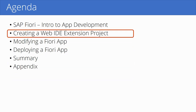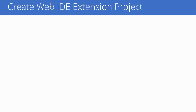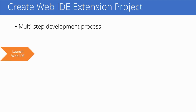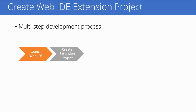Let's get started with creating our first extension project, the Web IDE extension project. The whole development process has multiple steps, and I will show you all of these steps in this course. We're going to go through this whole process. It starts by launching the Web IDE tool — obviously, we need this to do our development. And once it's launched, we're going to create an extension project or a modification project for an existing app.